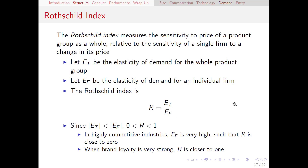How can we apply the Rothschild index to thinking about market structure? In highly competitive industries, the elasticity of an individual firm is very high. If one firm raises its price, you simply switch to their competitor — so they have a very high elasticity. But that doesn't mean the product group as a whole is elastic, just that the individual firm's demand is. When elasticity in the denominator is very high, the Rothschild index R is close to 0. Whereas in industries where individual brand loyalty is very strong — if the price of your preferred brand goes up, you just keep buying it — R can be pretty close to 1.